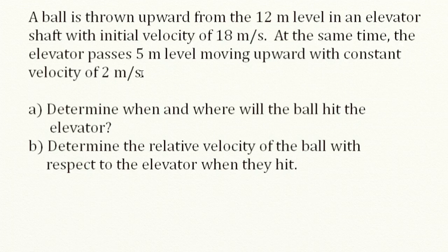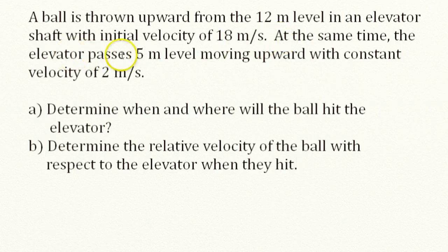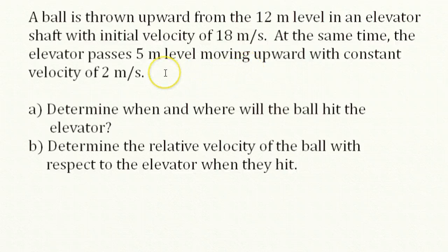We have a ball undergoing uniform acceleration — that's motion in a gravitational field. It starts going up from the 12-meter level at an initial velocity of 18 meters per second. We'll write an equation of motion for that ball. At the same time, we have an elevator which passes the 5-meter level moving upward at a constant velocity of 2 meters per second. So we're going to write an equation of motion for the ball and an equation of motion for the elevator.